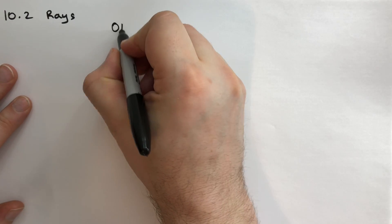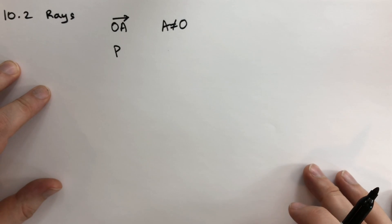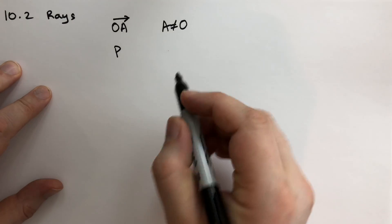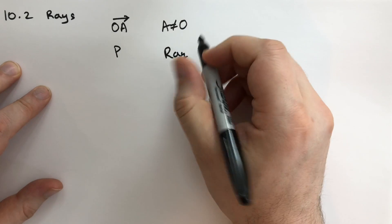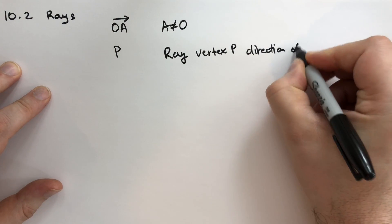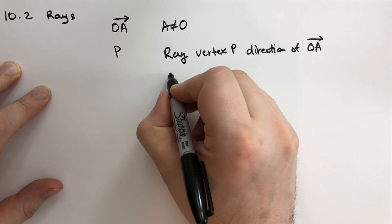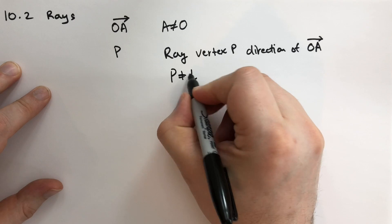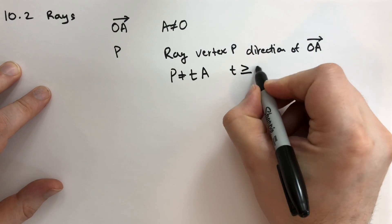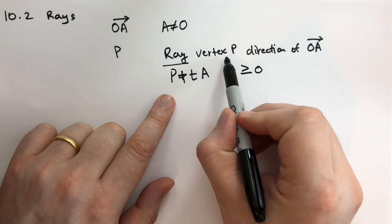Rays. Let OA be a located vector located at the origin such that A is not equal to the origin. So OA is a located vector like we talked about in the last section. A is definitely not the origin — that will be important. We're going to define a ray with vertex P in the direction of OA to be the set of all points P plus tA, where t is greater than or equal to zero. So t starts at zero and goes all the way up to infinity. All of these points is the ray that has a vertex at P and is in the direction of OA.